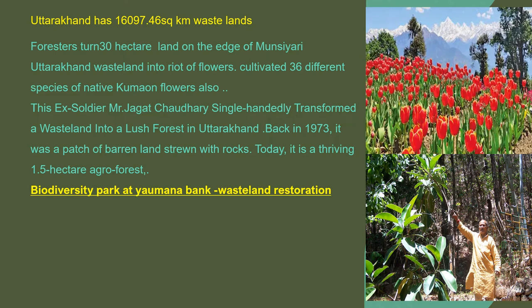Uttarakhand has 116,097 square kilometers of wasteland. However, 30 hectares of land at the edge of Munsiari has been converted into a valley of flowers where hoyland tulips have been grown, and this area has more than 36 different species of native flowers. Some land was also converted into a dense forest by an ex-soldier, Mr. Jagjeet Singh Chaudhary. Another example of restoration of degraded wastelands is the biodiversity park at Yamuna Bank.